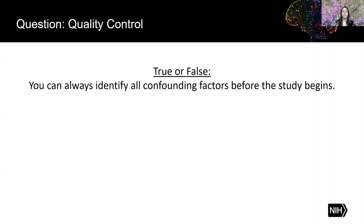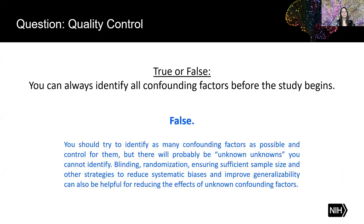True or false? You can always identify all confounding factors before the study begins. The answer is false. You should try to identify as many confounding factors as possible and control for them, but there will probably be unknown unknowns that you cannot identify. That's why blinding, randomization, ensuring sufficient sample size, and other strategies to reduce systematic biases and improve generalizability are good — because they can reduce the effects of unknown confounding factors.